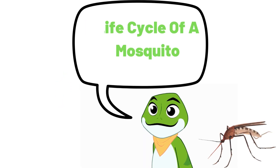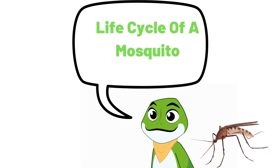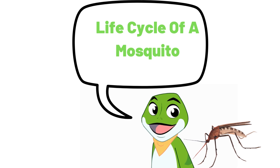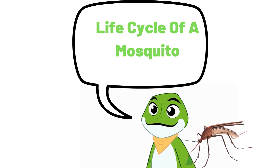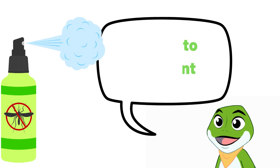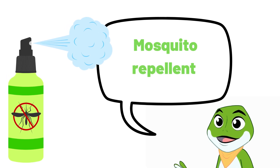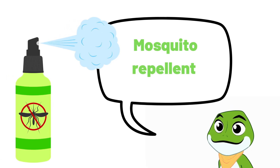That's the life cycle of a mosquito. Remember to take measures to avoid mosquito bites, such as wearing long-sleeved clothes, using mosquito repellent, and getting rid of standing water around your home.